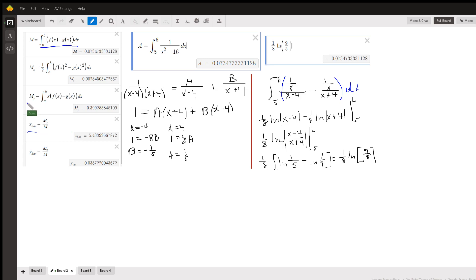And m sub y is defined like this: definite integral from a to b of x times f of x minus g of x. So it looks like x-bar is 5.3399. How do you do that if you're not just entering on a calculator like this?